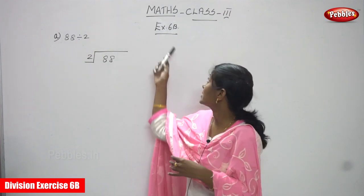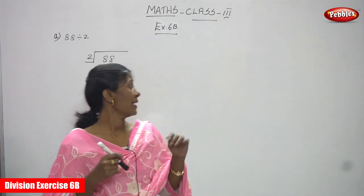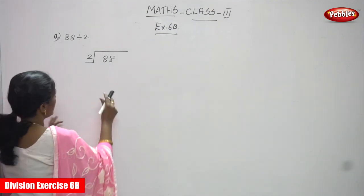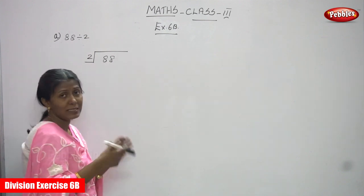Hi, welcome you all to Pebbles. In today's class, Maths Class 3 Exercise 6B, the first sum is 88 divided by 2. So it's a long division method. At the same time I taught in the last class...